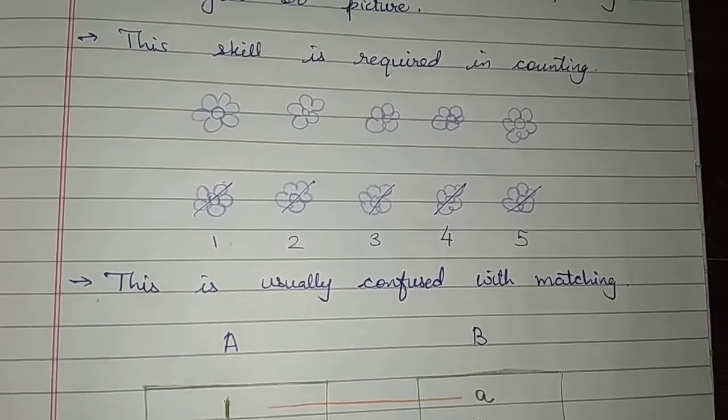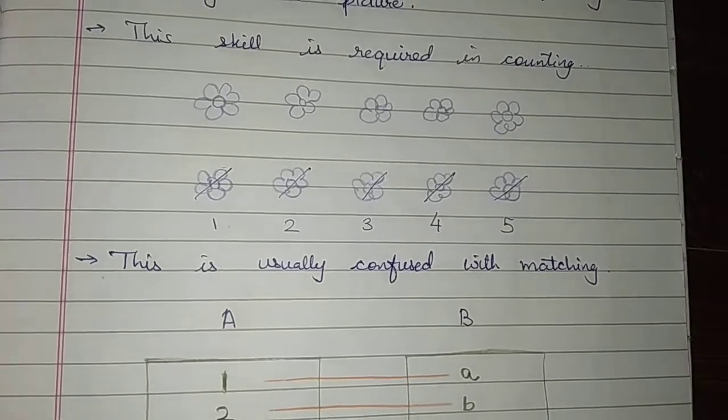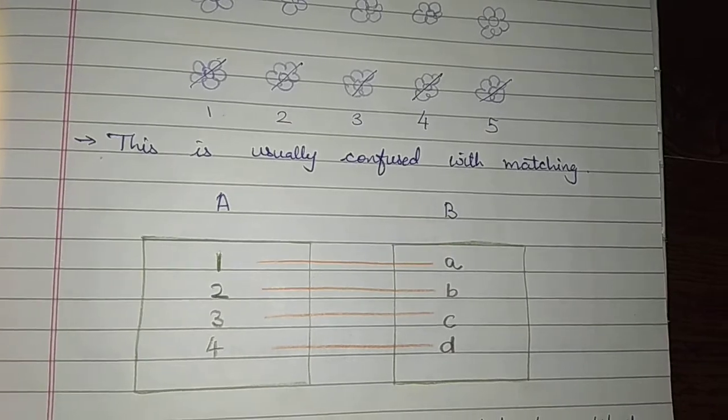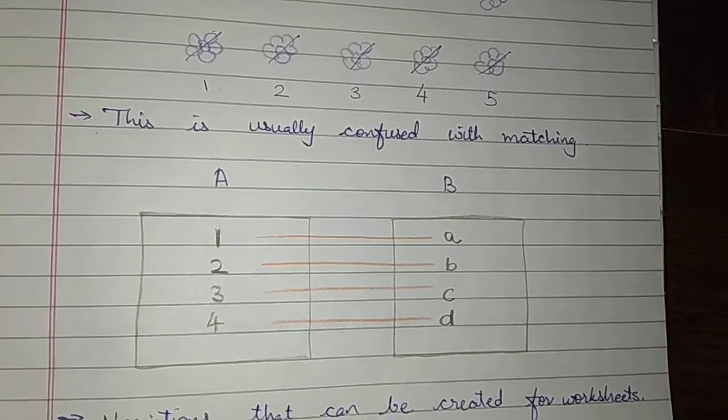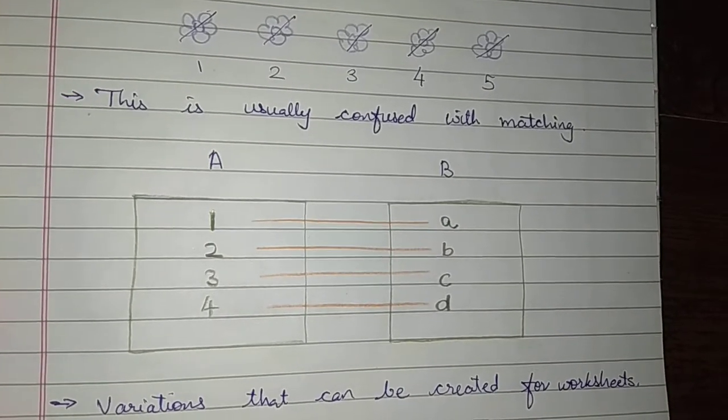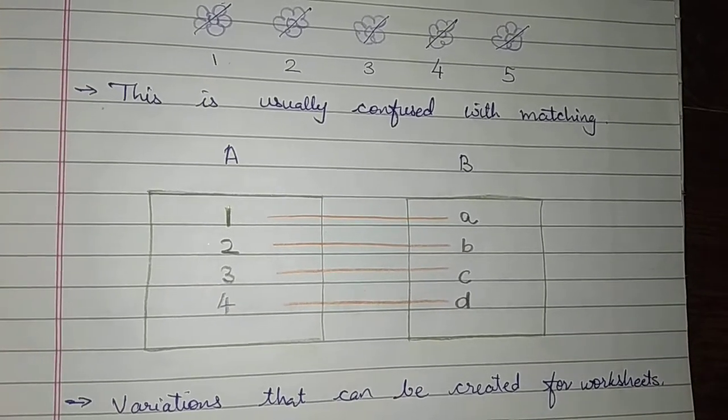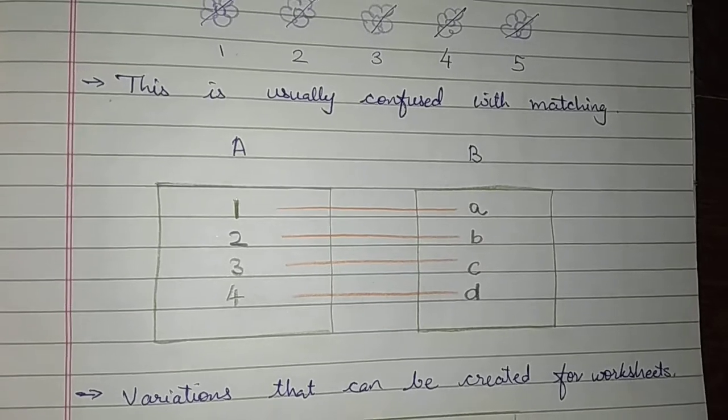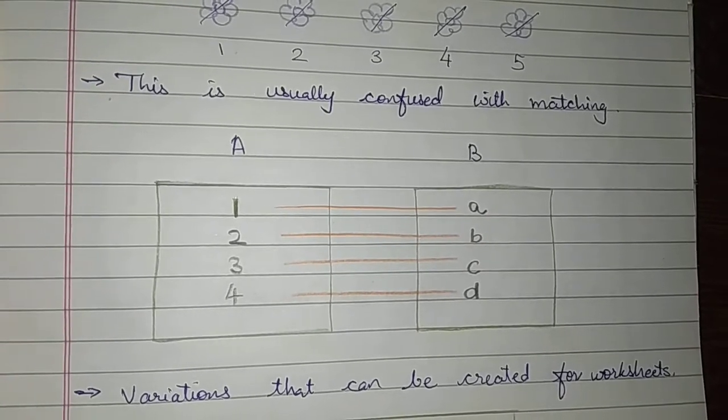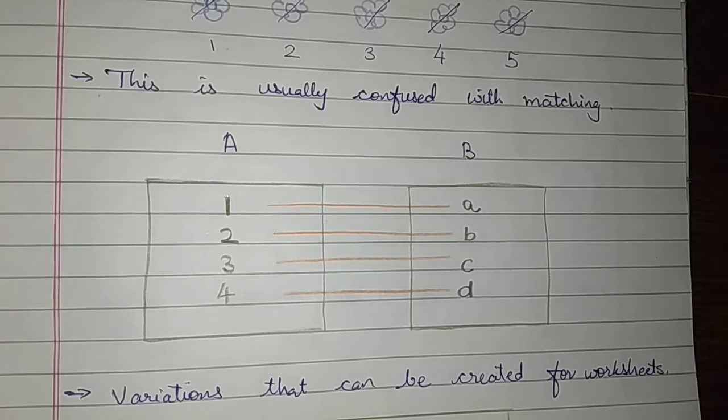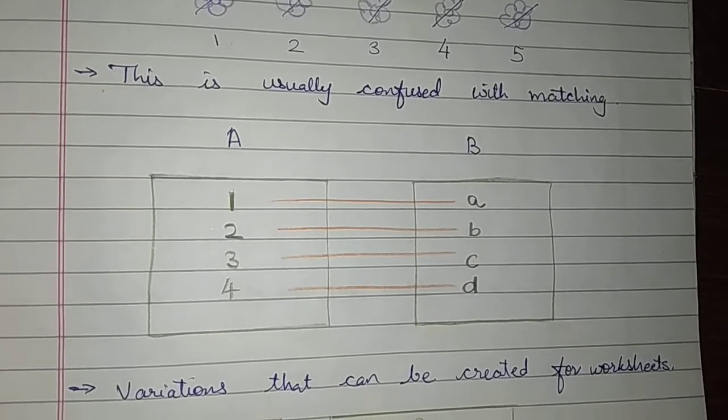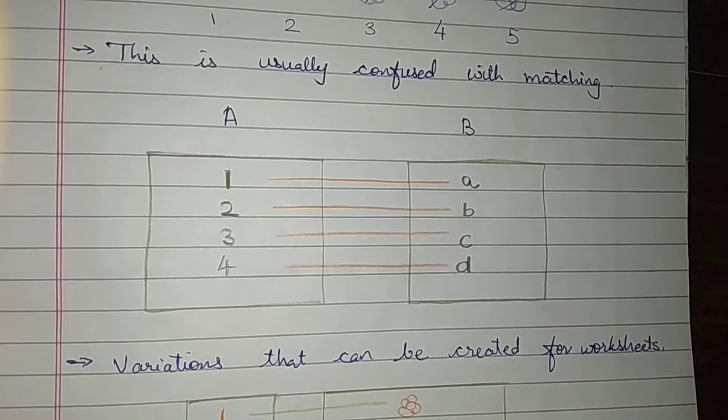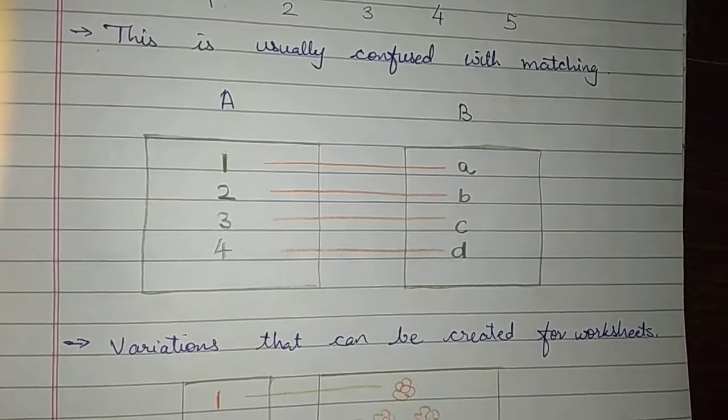One to one correspondence is usually confused with matching. To clear this doubt, I have drawn a diagrammatic representation to understand one to one correspondence. There are two sets, set A and set B. Item 1 of set A is corresponding to item A of set B. The important thing here is that both the items should be placed in a horizontal or a vertical manner.